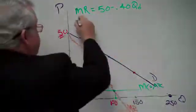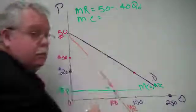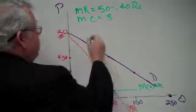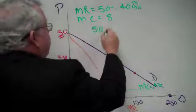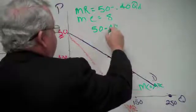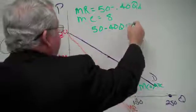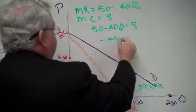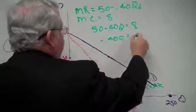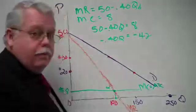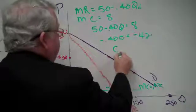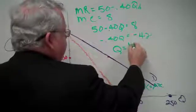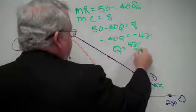And we know the marginal cost is what? $8. We set those two equal and so we have 50 minus 0.40 Q equals 8. Subtracting over we get minus 0.40 Q equals minus 42.